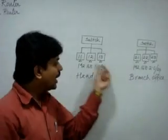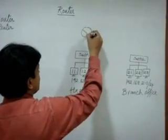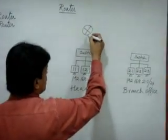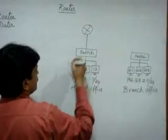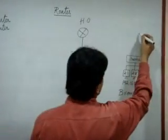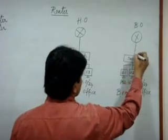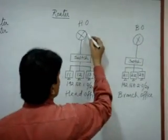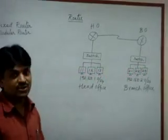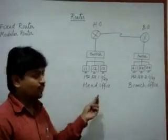If I want to connect the head office and branch office, we need a router — one router for the head office and one router for the branch office. We connect each LAN to its respective router, and then connect the two routers through a WAN link. We'll discuss the types of WAN links available. This is how we can connect one office to another with the help of routers.